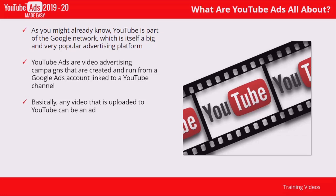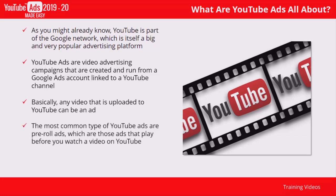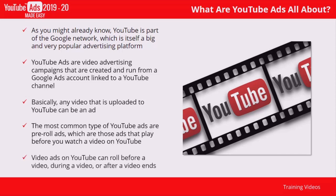YouTube ads run on YouTube, on the Google network, and on partner networks. The most common type of YouTube ads are pre-roll ads, which are those ads that play before you watch a video on YouTube. Those videos are uploaded and promoted by content creators and advertisers who connect their YouTube channels to their Google Ads account, so they can easily add their YouTube videos to video ad campaigns. Video ads on YouTube can roll before a video, during a video, or after a video ends. Some video ads can be skipped by viewers while some can't, depending on the ad format chosen by the advertiser during campaign setup.